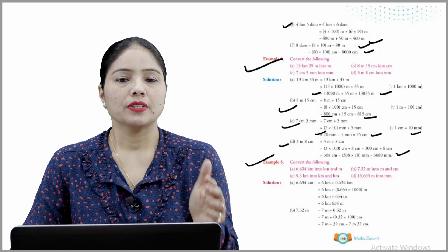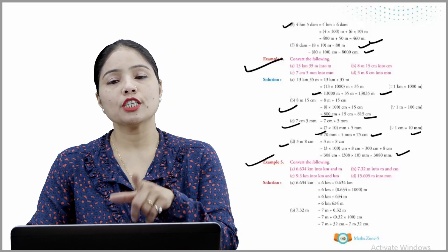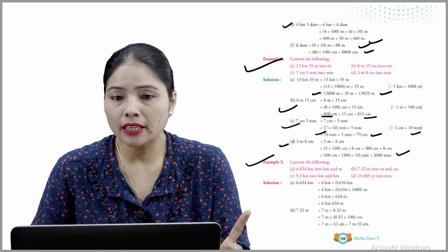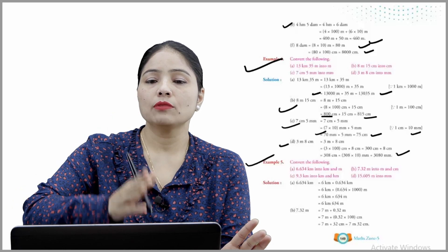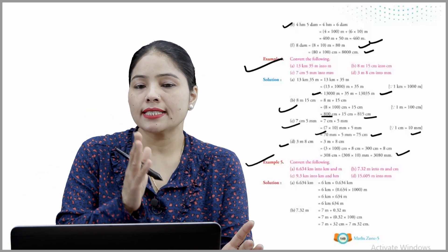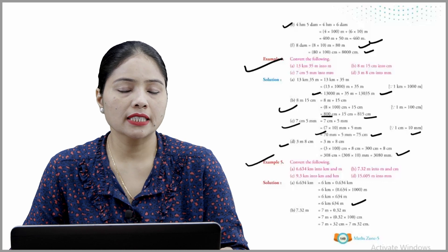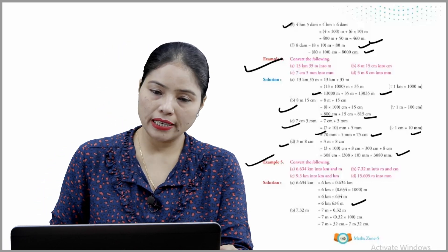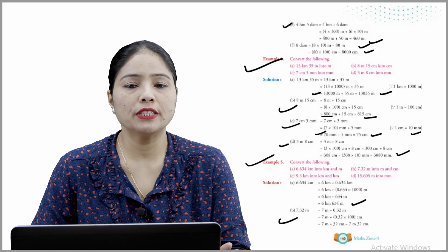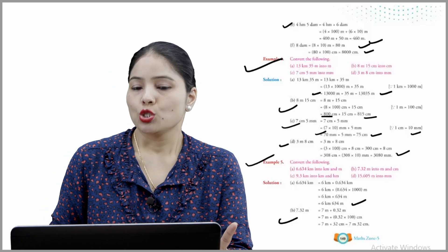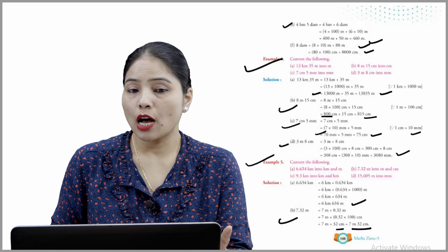Example 5 — convert 6.634 km into kilometers and meters. To convert to meters, multiply by 1000: the decimal part 0.634 × 1000 = 634 meters. So the answer is 6 km 634 meters. Similarly, for 7.32: 7 meters stays, 0.32 × 100 = 32 centimeters. So 7 meters 32 centimeters.